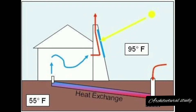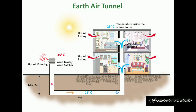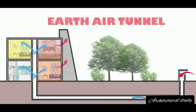The recommended depth for EATS is generally 3 to 6 meters, though the ideal placement depends on climate, soil type, and water table. The Earth's temperature gradually decreases with depth, but within this range, variations have minimal impact on performance. Consulting an engineer is key for optimal design and depth selection.